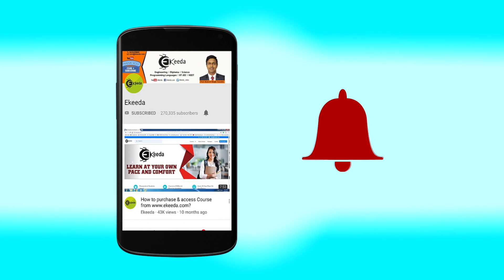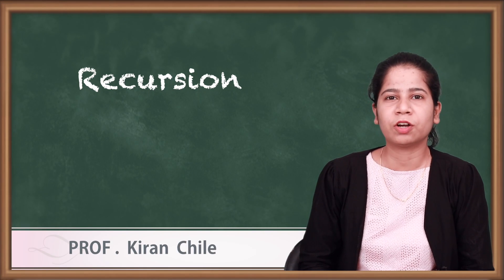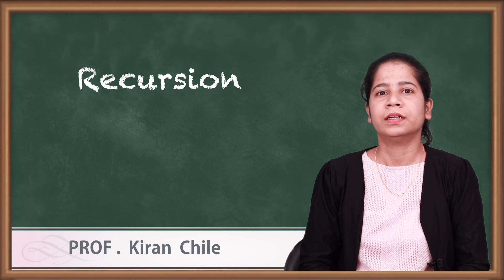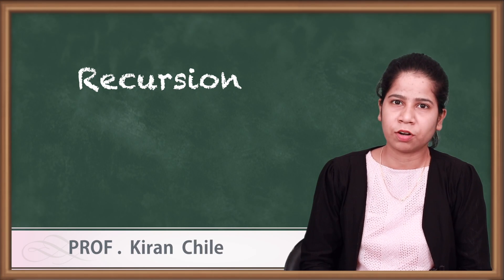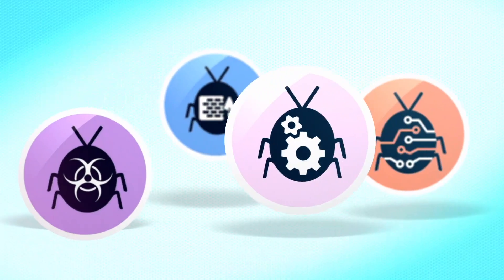Hello friends. In the last video we saw passing and returning object data types. Now we are going to see a very important concept: recursion. The name itself says something re-occurs — something is happening again and again. Don't confuse it with a for loop, though there is some similarity. This concept totally depends on methods.